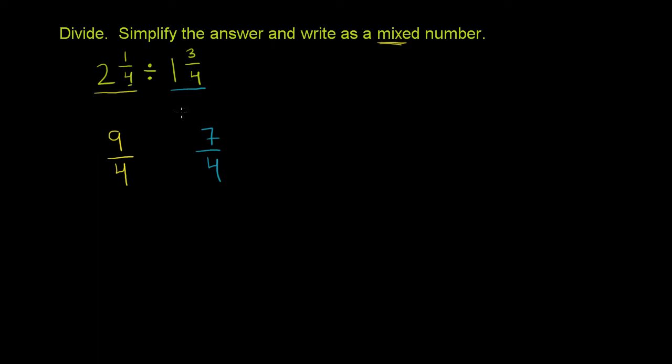2 and 1/4 divided by 1 and 3/4 is the same thing as 9/4 divided by 7/4. And we saw in several videos already that dividing by a fraction is the same thing as multiplying by its reciprocal. So this is equivalent to 9/4 times the reciprocal of this. We're changing the division operation to a multiplication, and we're taking the reciprocal of the 7/4. The reciprocal of 7/4, you swap the numerator and denominator, and you get 4/7.